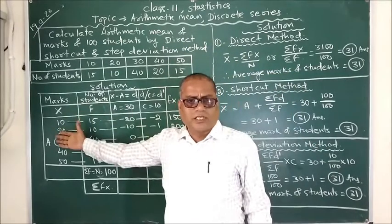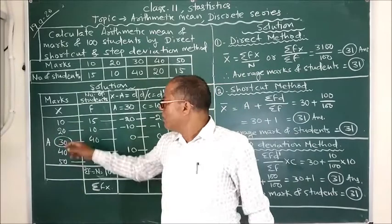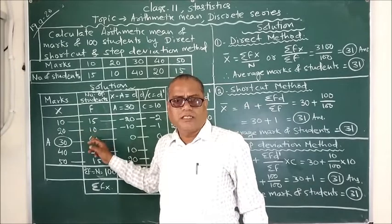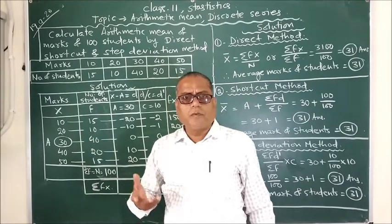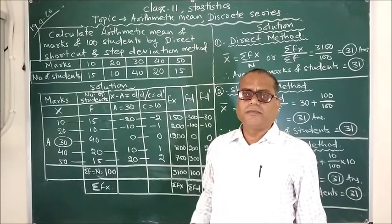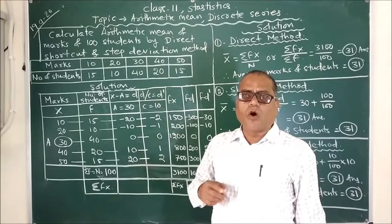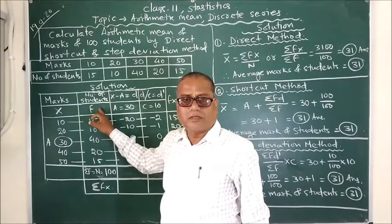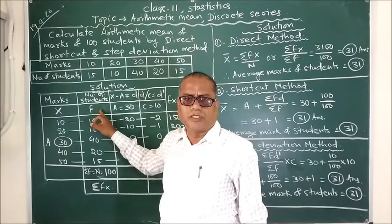A discrete series is a grouped data where along with the values their frequencies or the number of occurrence, meaning how many times a particular value occurs, is its frequency. It is symbolized by the letter f, small f, means frequency.